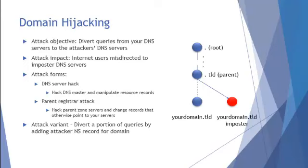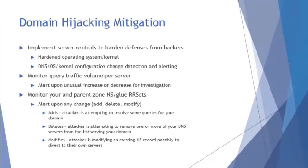The attacker could basically manipulate all of the nameservers and replace them with imposter nameservers totally, or they could supplement — one variant is to divert a portion of queries by just adding a nameserver record or two, so that not every query for your domain goes to the attacker's site, but only a portion. This is intended to be a little less obvious, so all of your nameserver traffic doesn't drop to zero. You do see a slight decrease, and some queries go to the impostor's nameservers, which has detrimental impacts for those people trying to reach your sites legitimately.